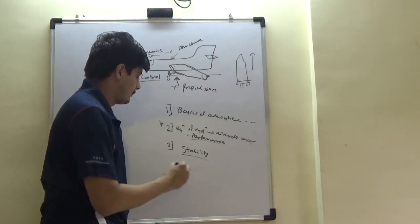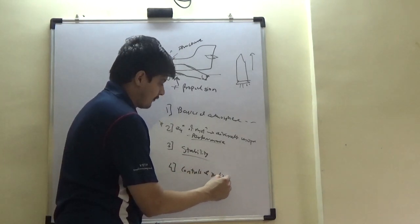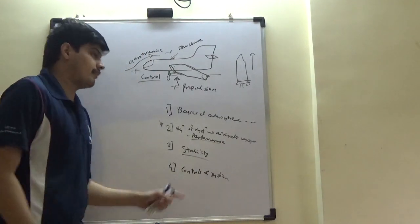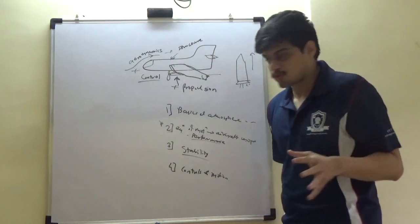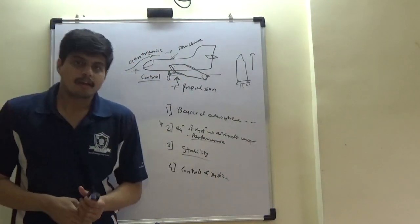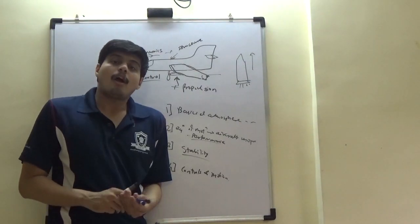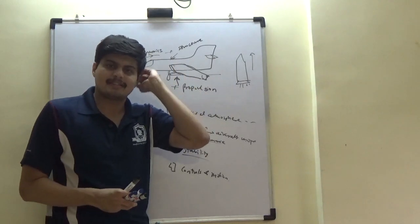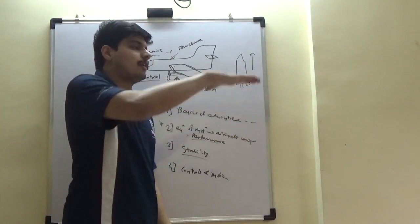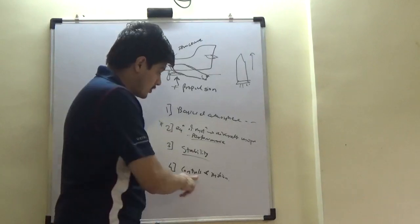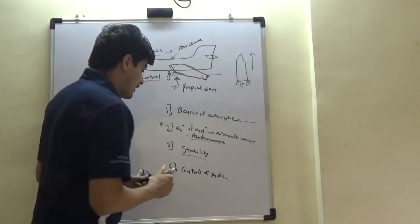Stability is extremely important. The fourth part is controls and motion. This talks about the aircraft as a whole — what are the different sets of control surfaces applied and how they carry out maneuvers. If somebody tells you a 60-second full turn, what does that mean? How are the control surfaces deployed? If somebody says the aircraft is undergoing phugoid motion — it looks alien today, but there is such a motion. And a spin motion — when the aircraft goes into a spin, it's a disaster. That's the fourth part.